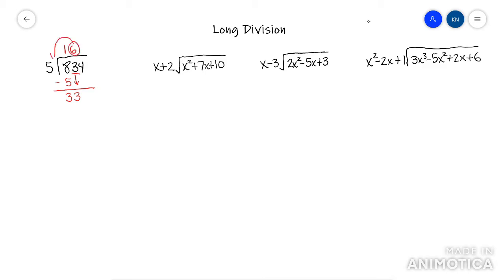You take the 6 and you multiply by the 5. So 6 times 5 is 30 and you subtract. And you get 3. You then drop the next term.